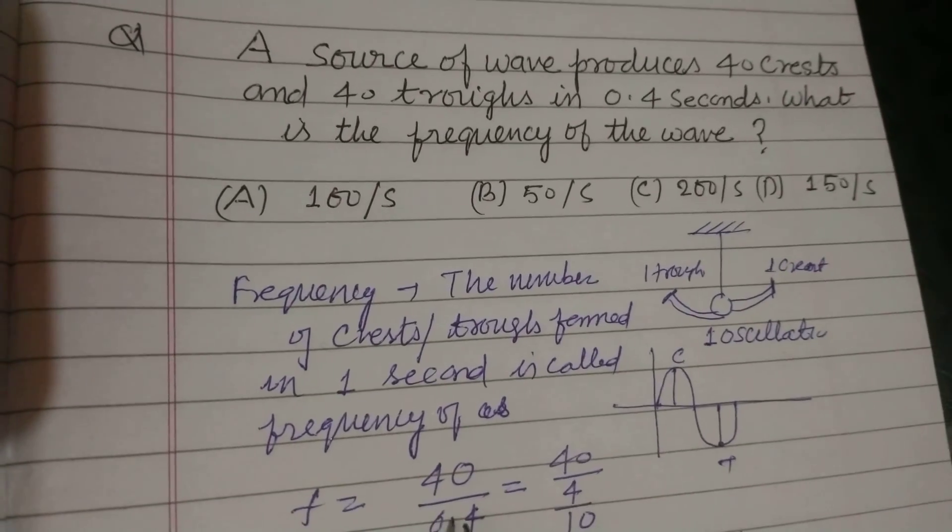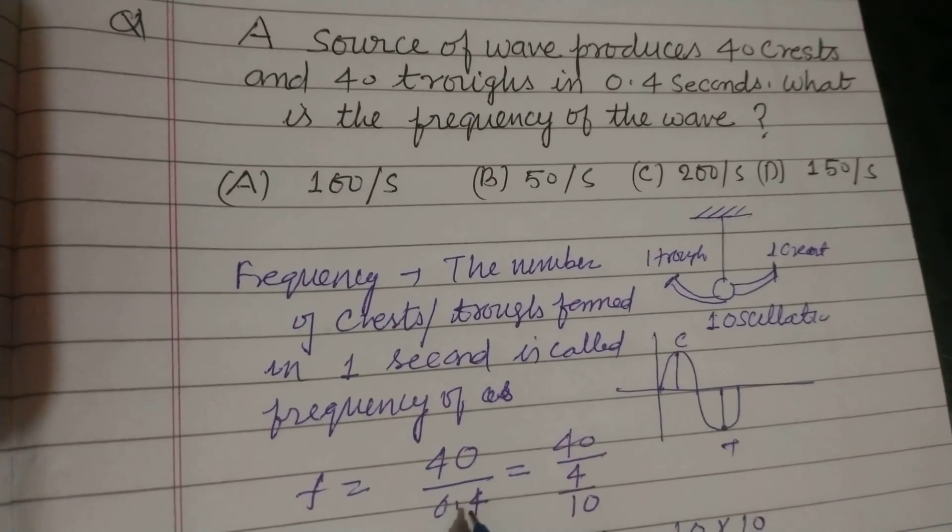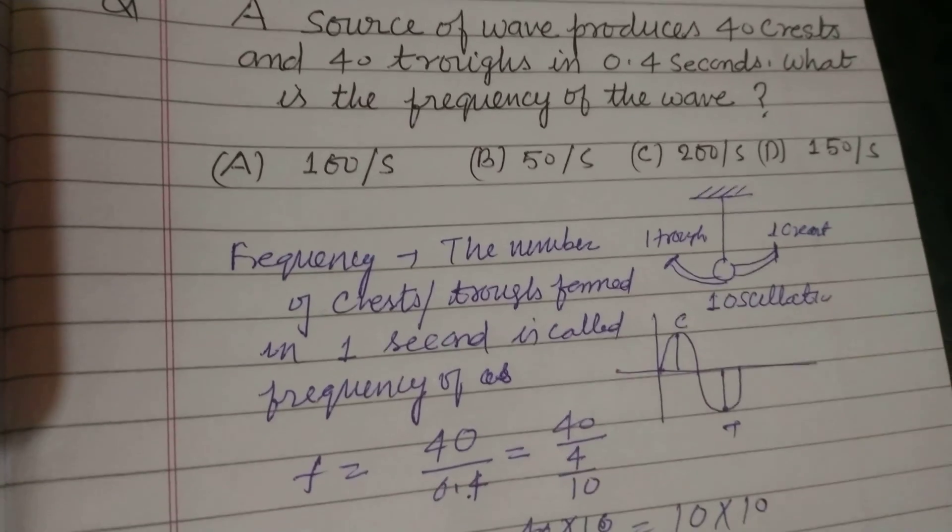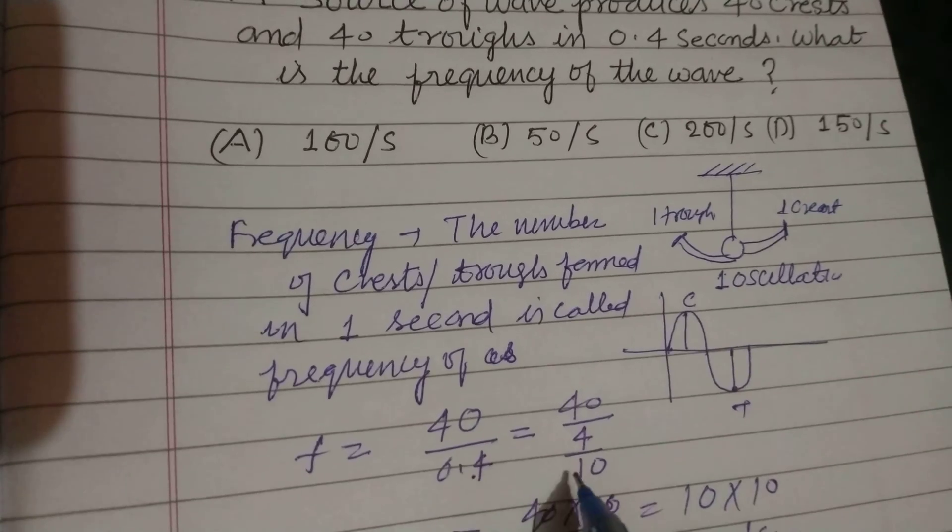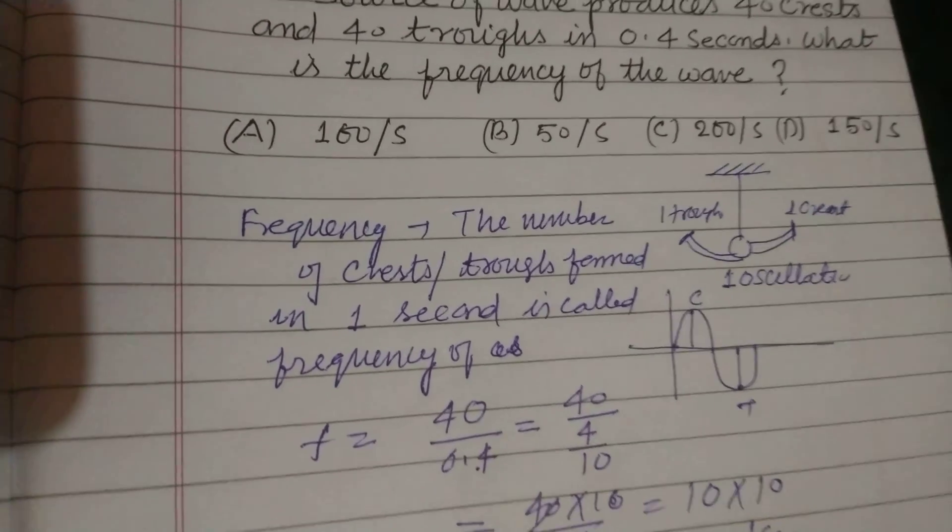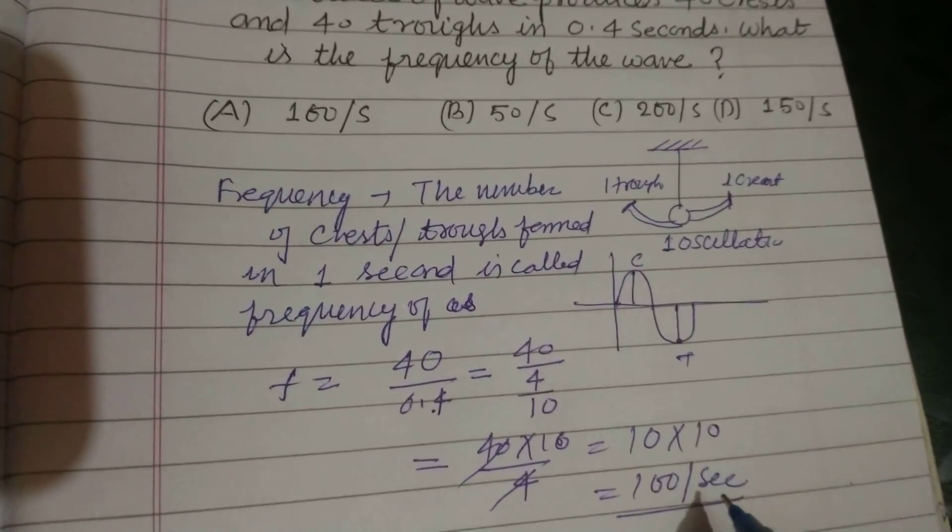So 40 crests formed in 0.4 seconds, therefore crests formed in one second is 100. Therefore frequency is 100 per second.